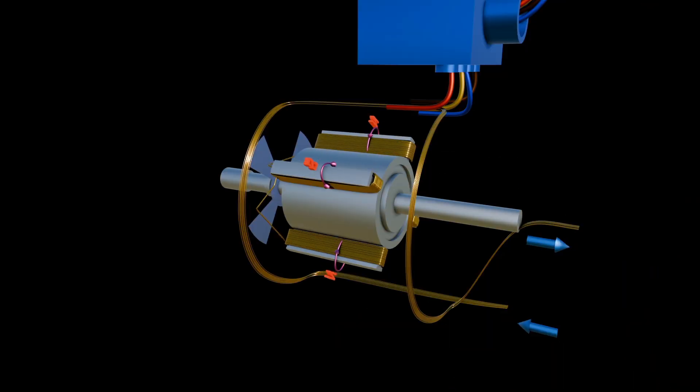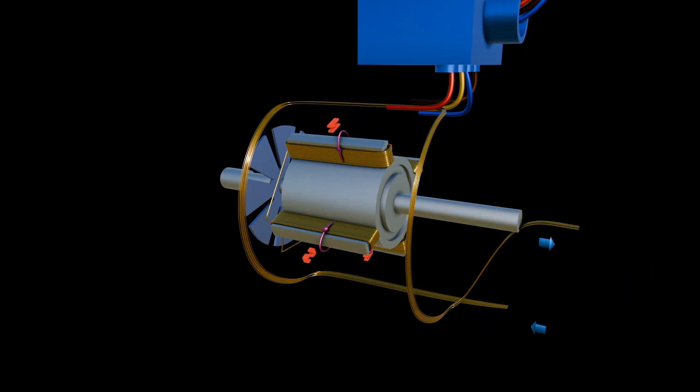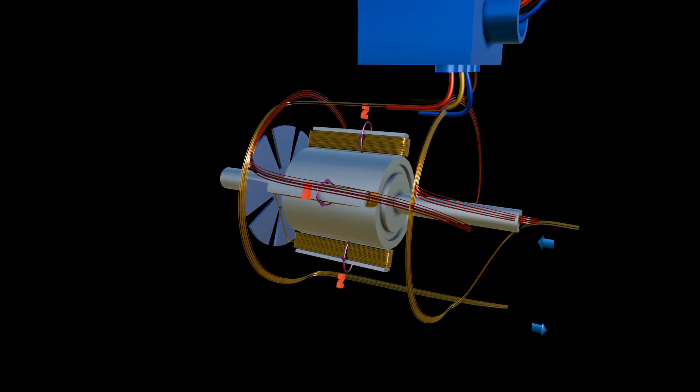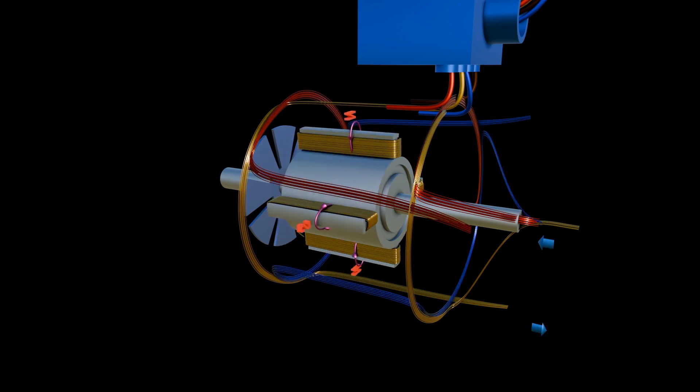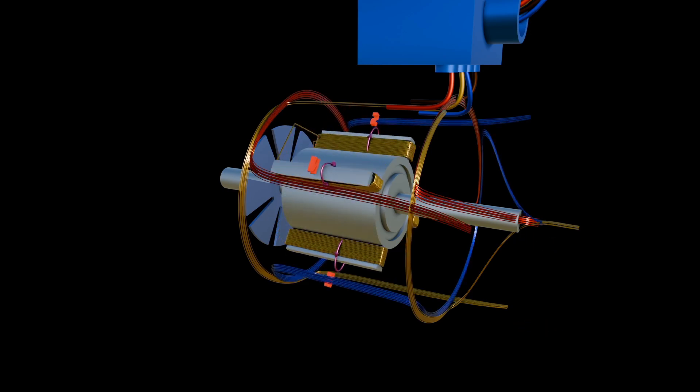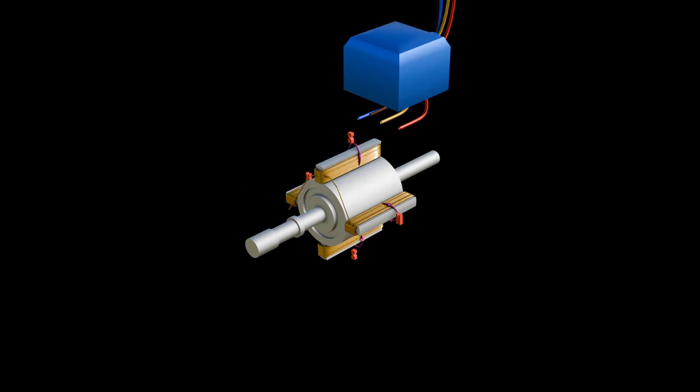Adding the second and third windings displaced 120 degrees from each other will form a three-phase alternating electricity. One terminal from each of the windings are always connected together to form a star configuration.